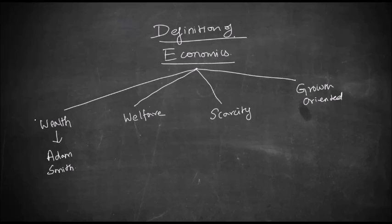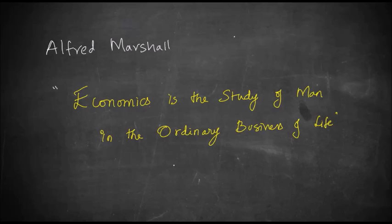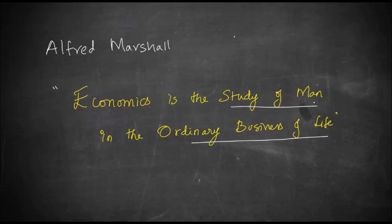Since Adam Smith's definition focuses only on wealth, it was not considered accurate, and a second definition emerged with a focus on welfare. That definition was given by Alfred Marshall. Alfred Marshall defines economics as the study of man in the ordinary business of life. Here the definition focuses more on man, whereas the previous definition focused only on wealth. The focus is on how man earns his income and how he spends it — the welfare of man.